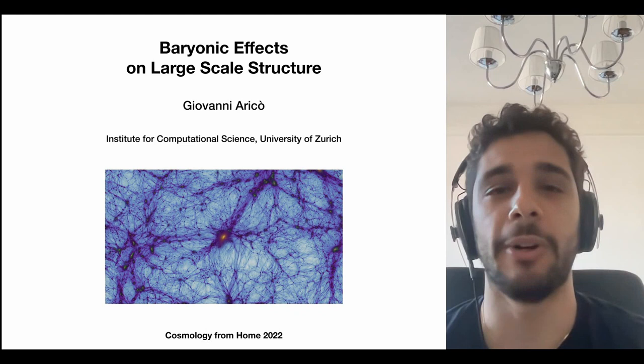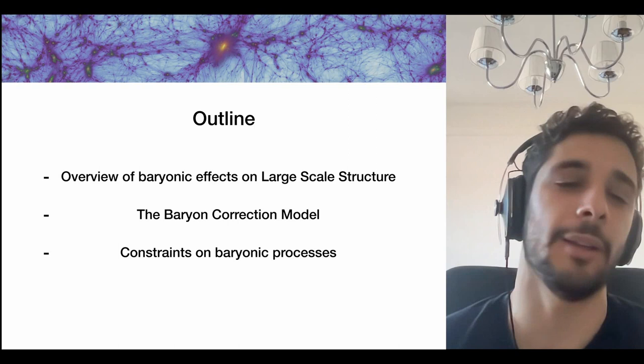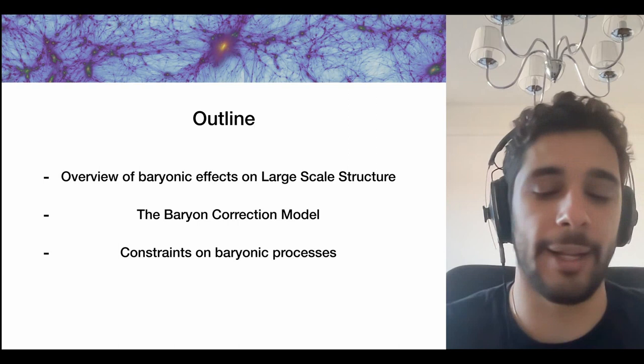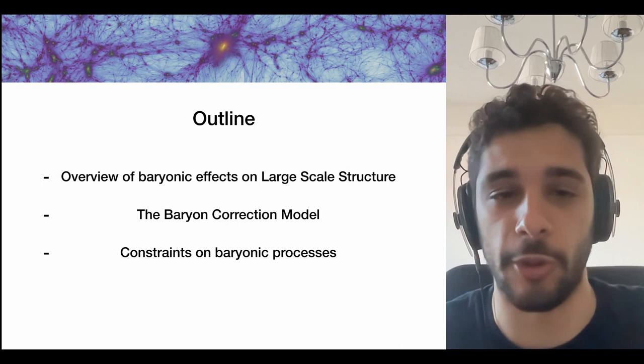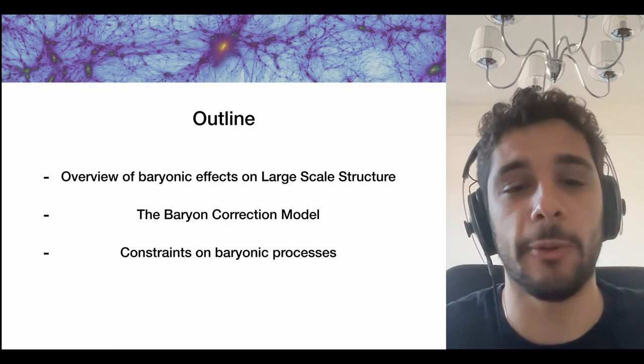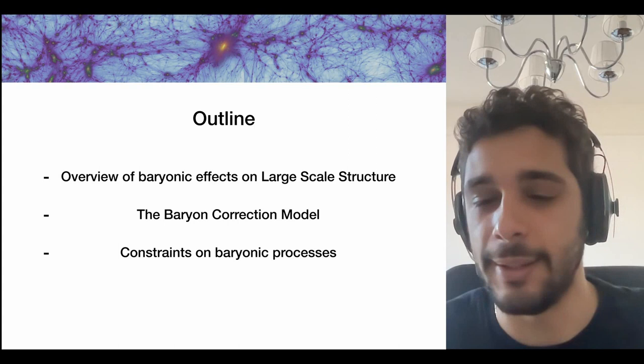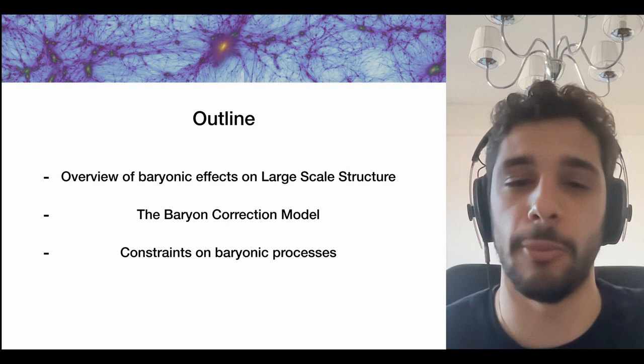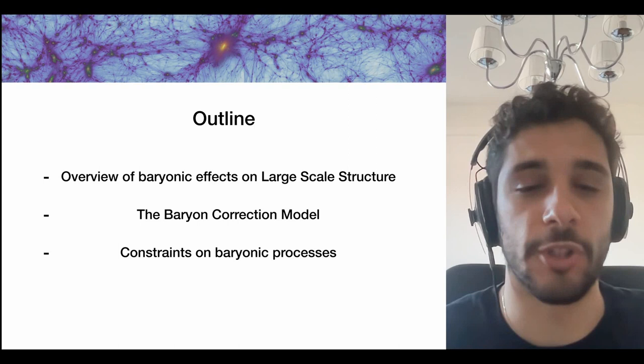Today I'm going to speak about baryonic effects on large-scale structure. My talk has three different parts. At the beginning I'll give an overview of baryonic effects on large-scale structure — what we really mean when we speak about baryonic effects and why they are important in cosmology analysis. Spoiler: because they do affect our cosmological inference and can bias our cosmological parameters. Then I'll focus on the baryonic correction model, and finally explain how we can get information about astrophysical processes through it and constrain both cosmological and astrophysical parameters.